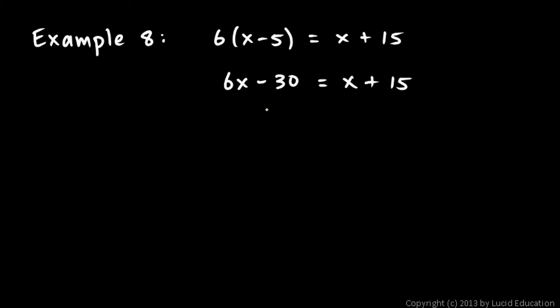Okay, now let's add 30. And I have to do exactly the same thing on each side. And I chose 30. I chose to add 30 because of this minus 30. Those cancel out. And that leaves me with 6x on the left, and then my equals sign. And on the right, I have x plus 15 plus 30, which is x plus, these combine to 45.